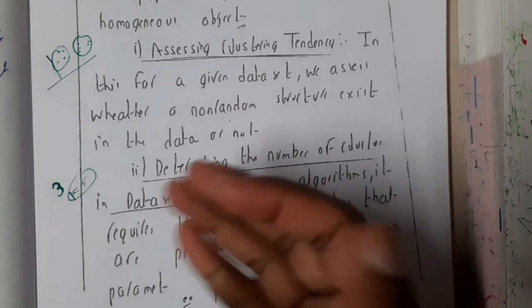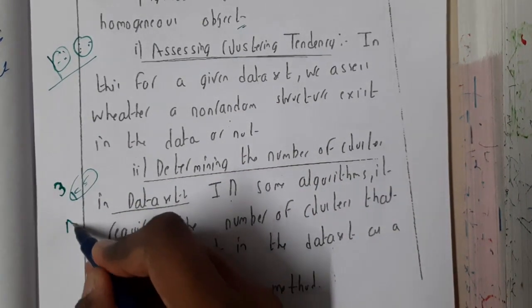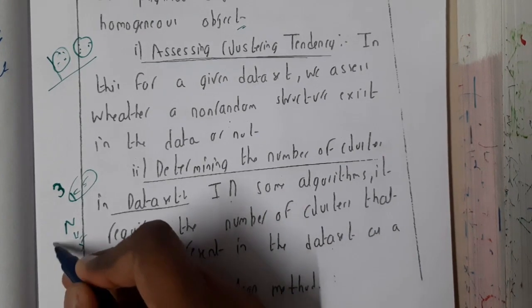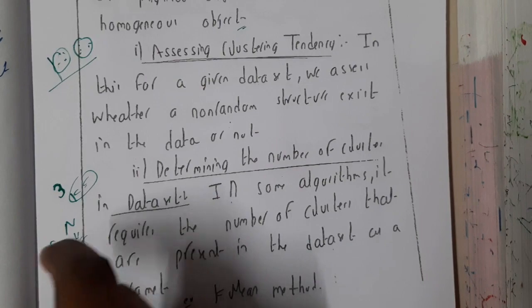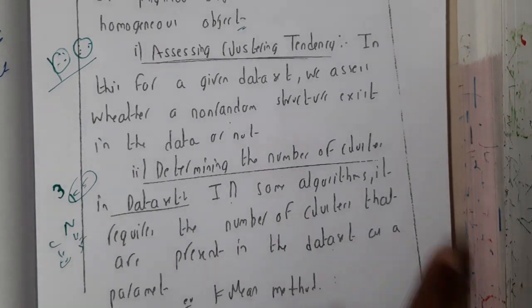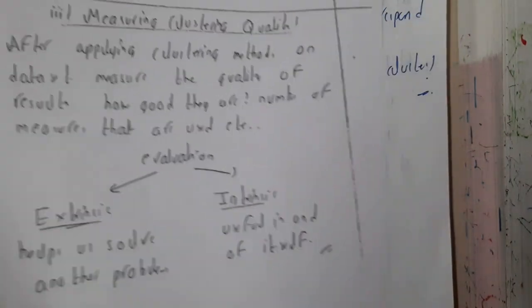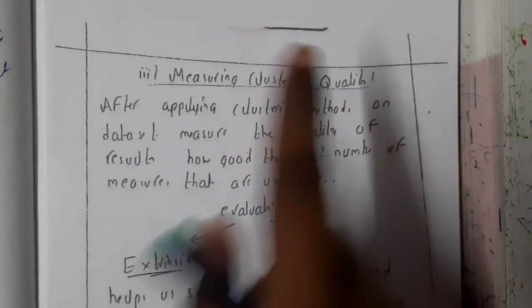That is also really important because if the number of clusters are more and there are very few n, so n is only 5 and you are saying clusters are also 5, so indirectly each one is getting one cluster. In this way you can evaluate based on n and c, the number of clusters.